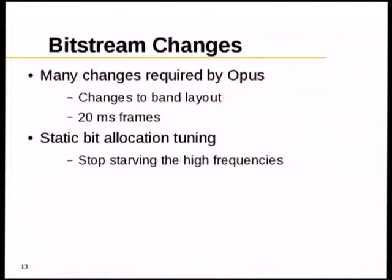Many changes were made for integration within Opus. One was changing the layout of the bands so the same layout works for all frame sizes, which means frame size can be changed on the fly without any glitch. Another change was implementing 20 millisecond frames, because SILK used that and it also has the benefit of increasing quality — for music, 20 millisecond frames are better than 10.